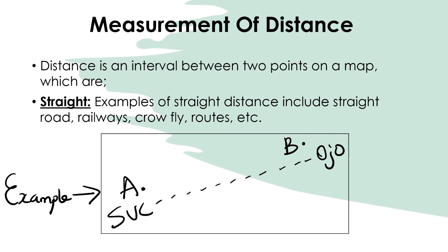Now we'll look at measurement of distance, which is essential in map work. Distance is an interval between two points — the space between one point and another. Distances are divided into two types: straight distance and curve distance.